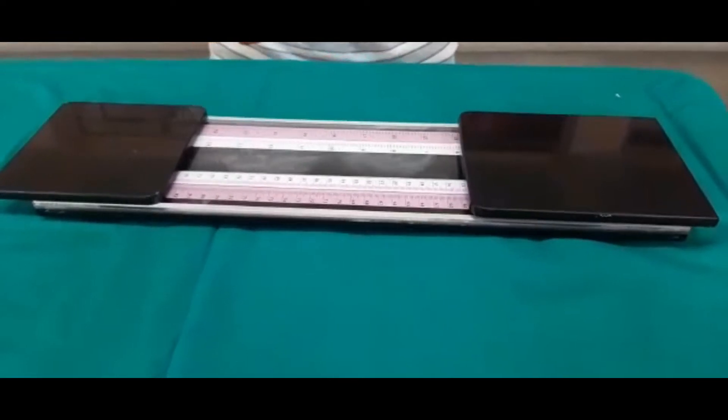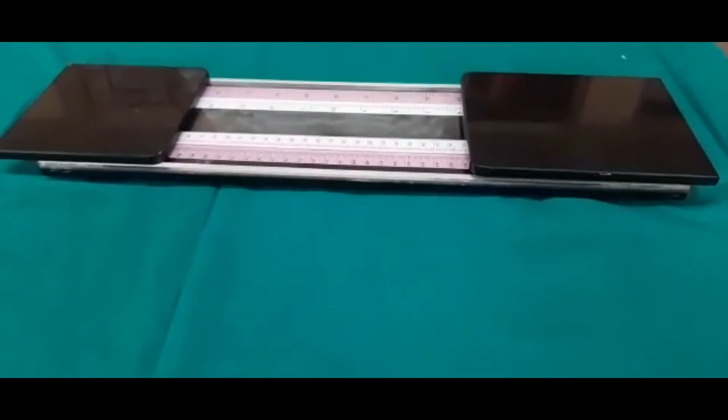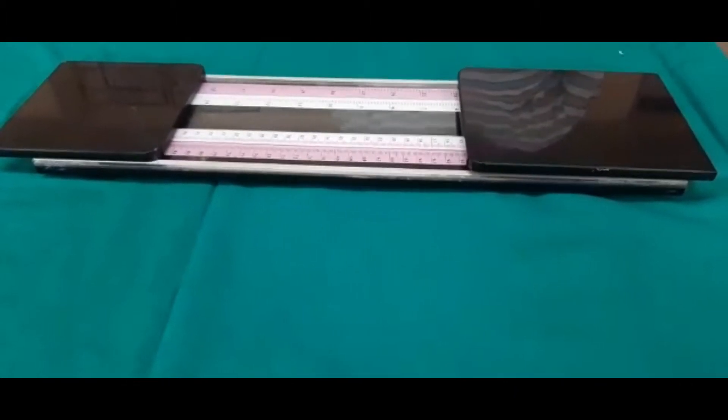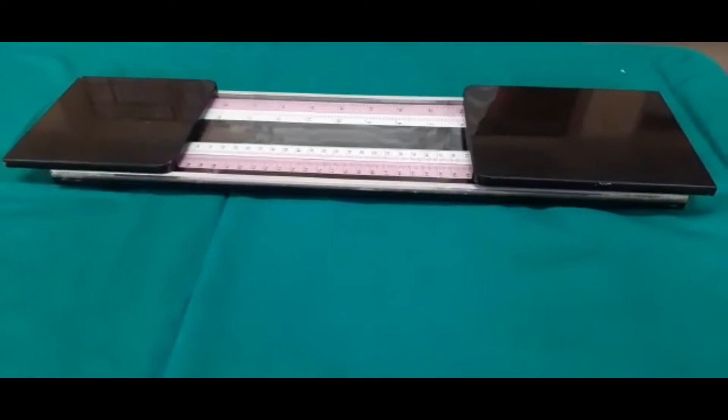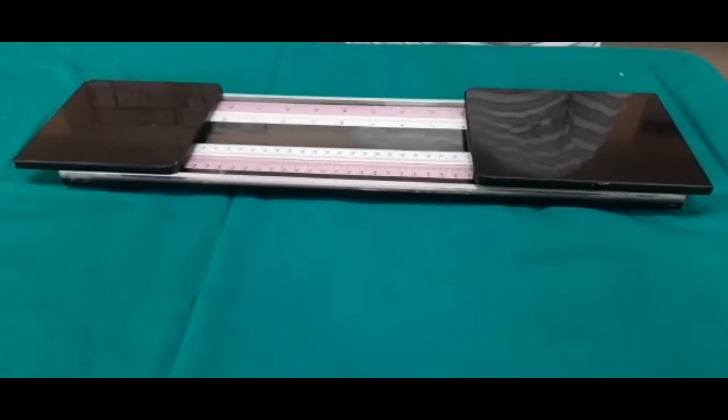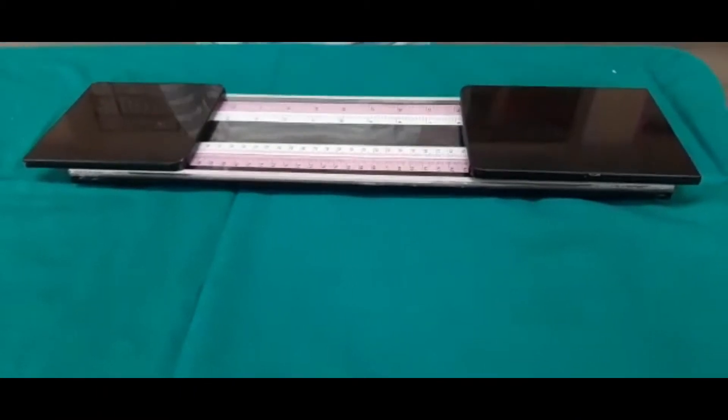You know very well the difference between length and height. Length means when the baby is not able to stand at the time of infancy, and when they are able to stand, that time we check the height with the help of a stadiometer. This is an infantometer.